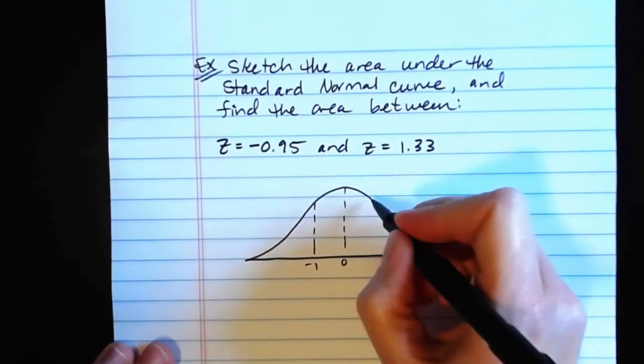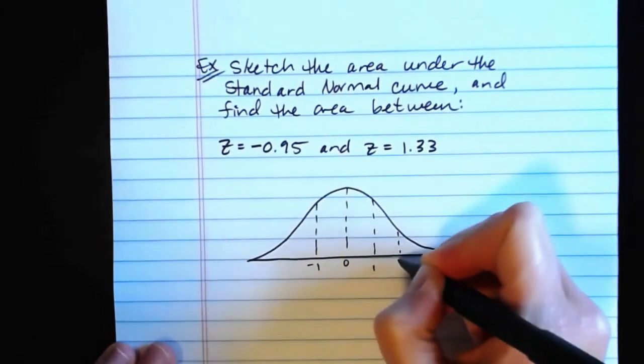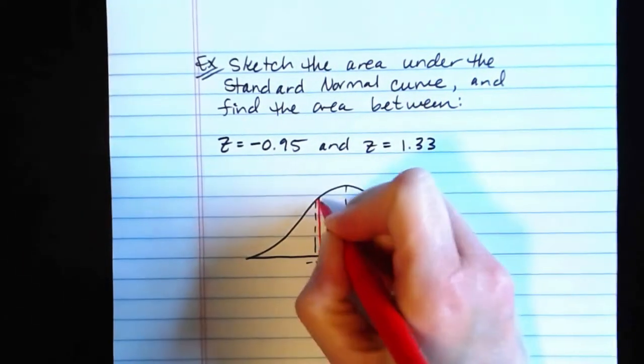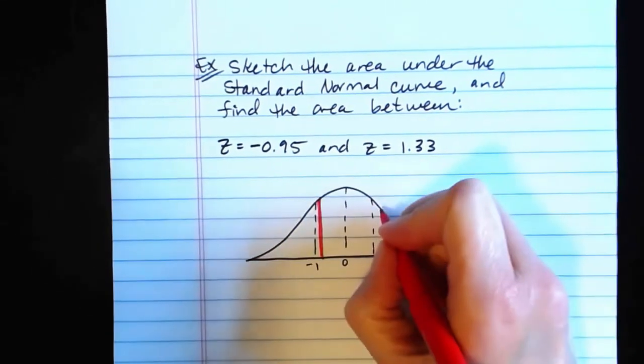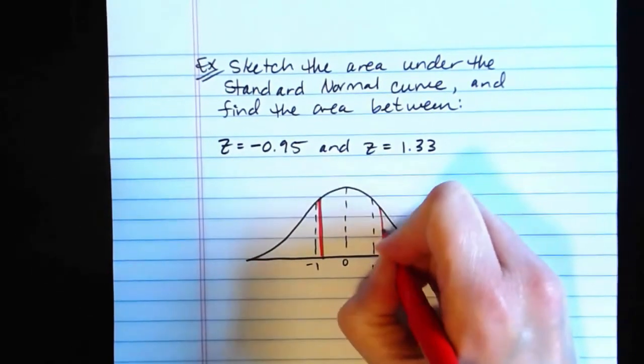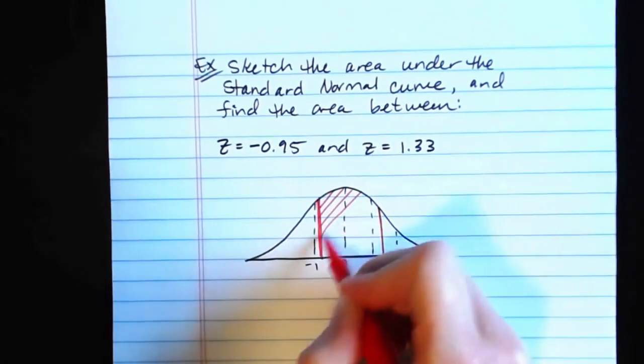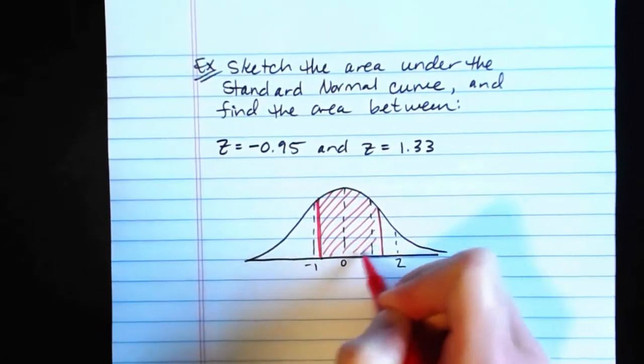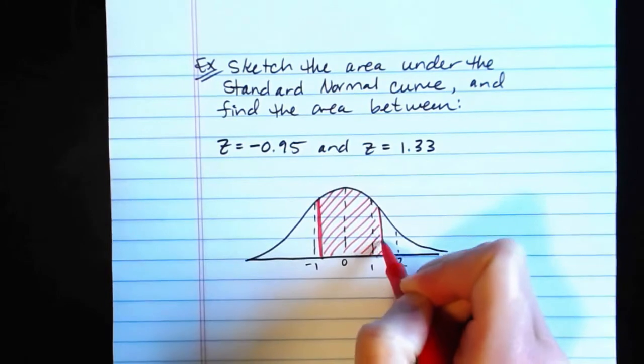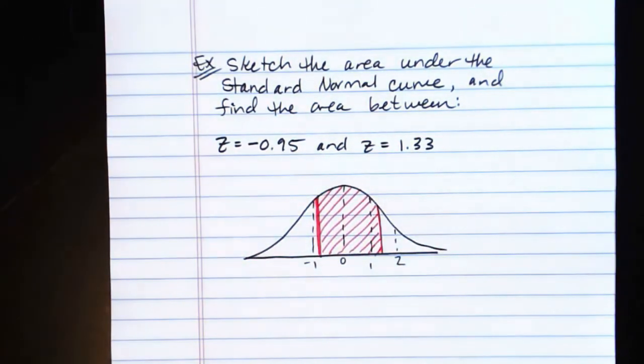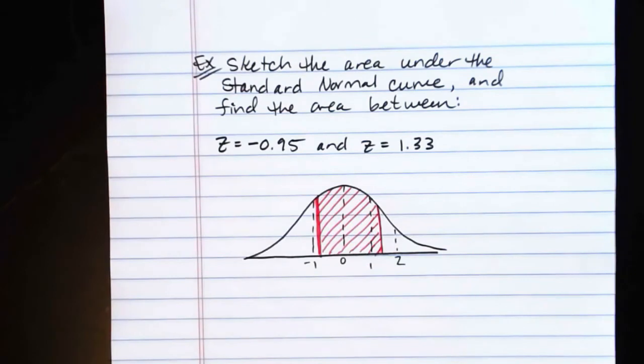Negative 1, 1, 2. Negative 0.95 is going to be almost out to the negative 1. It's going to be pretty close. 1.33 will be a little bit above the 1. And so here's our sketch. We wanted to sketch the area between those two endpoints under the standard normal curve. There's the area we're looking for.